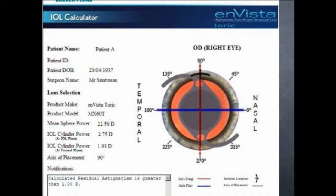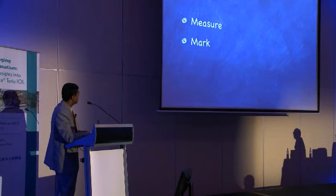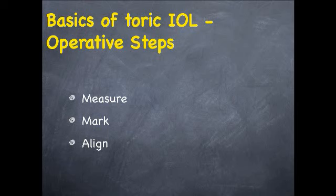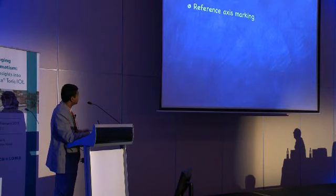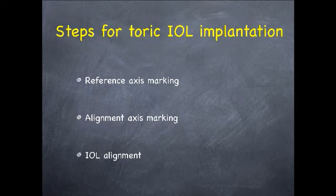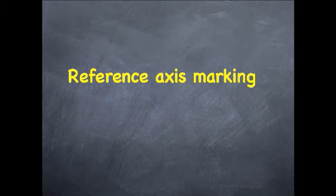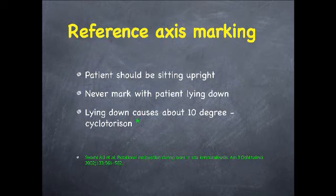The basic steps are: first step is to measure, second step is to mark, and the third step is to align the intraocular lens to the mark while the patient is on the table. The first step is the reference axis marking, then the alignment of the lens to the axis marking, and then fine-tuning the IOL alignment while the lens is inside the capsular bag. The reference axis marking is one of the most critical steps. Patients should be sitting upright while you're marking, because studies from refractive surgery show that when patients lie down from the sitting position, the eye undergoes torsion, causing almost a 10-degree error.